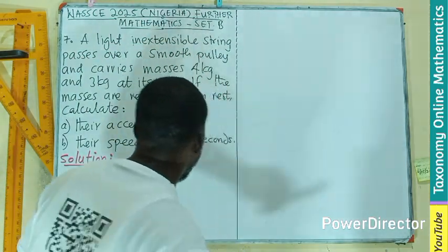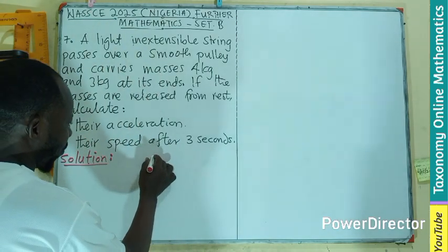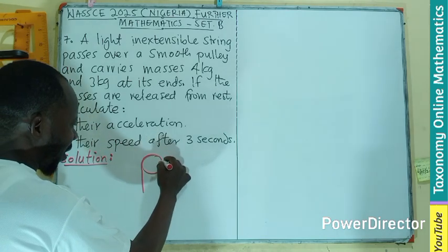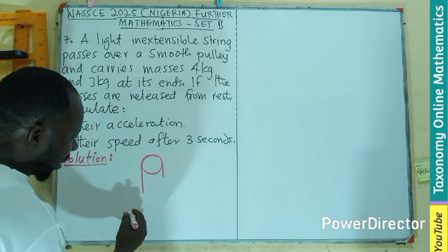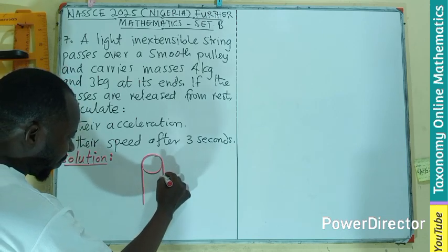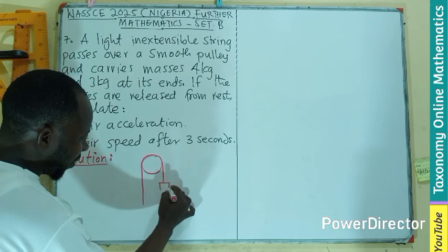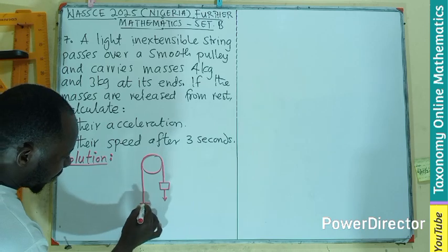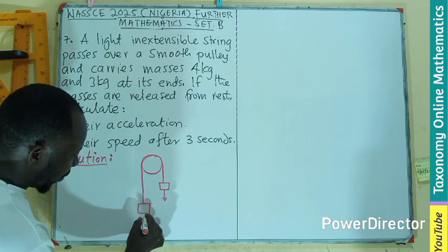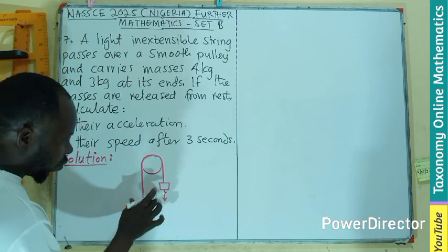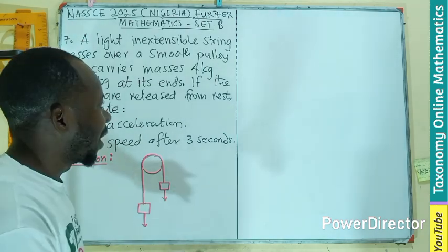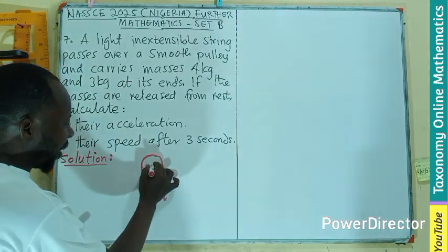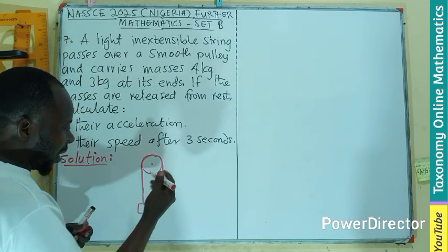Let's make a sketch of what the pulley looks like, with both masses connected by the inextensible string. Coming down a bit, we have the mass on one side and the mass on the other. You might wonder why one weight is lower than the other — the masses are different, so the bigger mass will definitely take a downward movement.